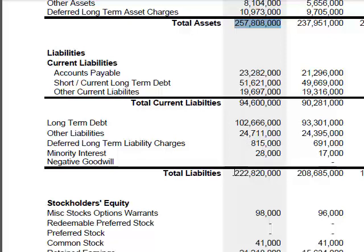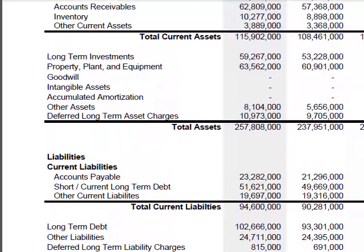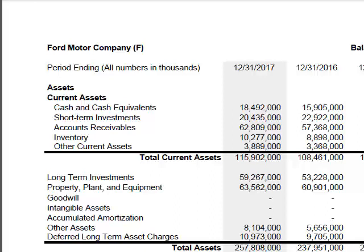After subtracting liabilities from assets, there's about $35 billion left over in equity. Think of it like what we did in Business 121 on a personal level — if you sold all the assets and paid off all the debts, according to the accountants there would be about $35 billion remaining. Just by looking at that, we can see Ford is in pretty good shape. We're going to learn about the ratios as we go along and pick out numbers from the balance sheet and other financial statements.